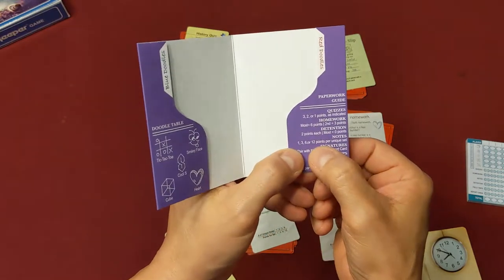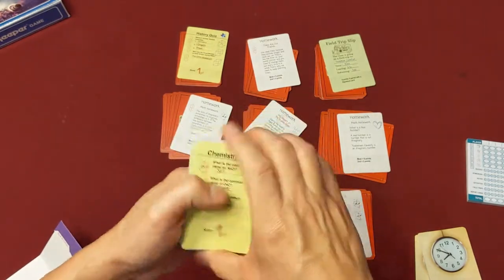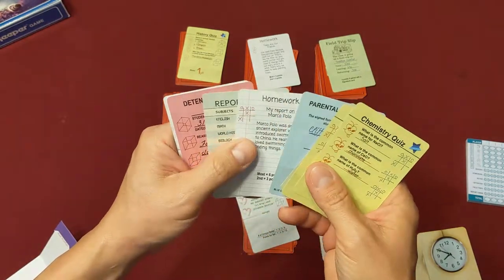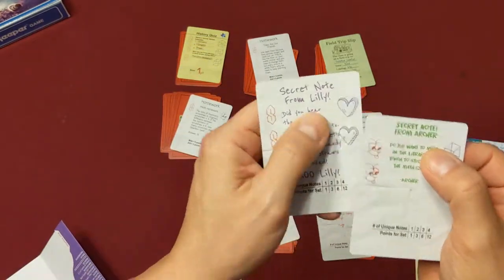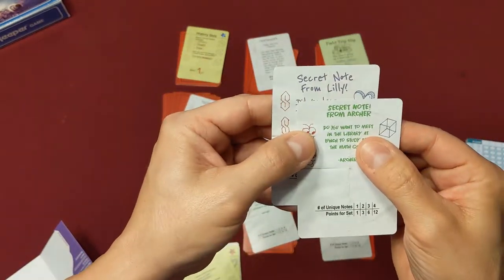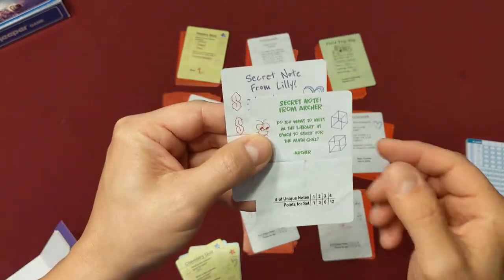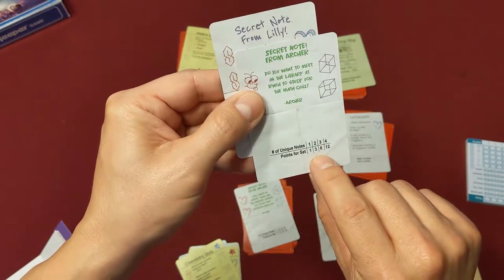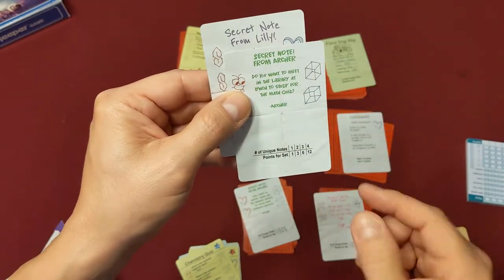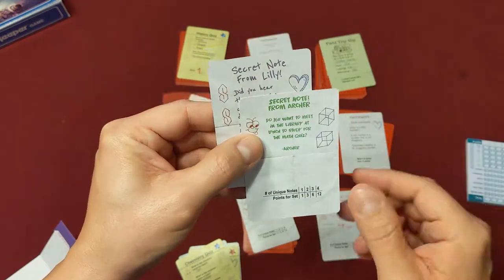Notes: you have one, three, six, or twelve points per unique set. So what's a unique set? There are four different characters in the game that give you notes. Here are two of them here: Archer and Lily. So if I have a note from Archer and Lily, that is a unique set of two which is three points. And so if I get another set from Lily and Archer, that would be another set of two for three points. If I have all four, that's twelve points in the game.